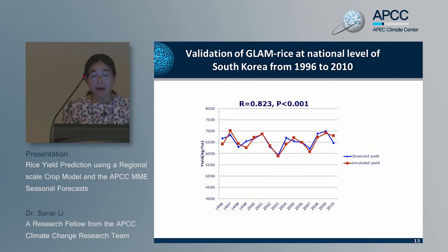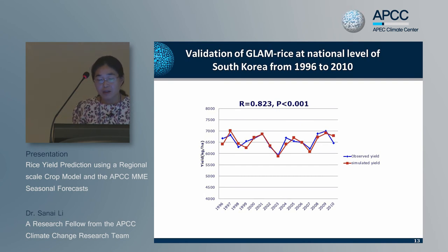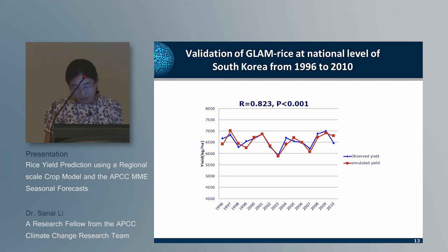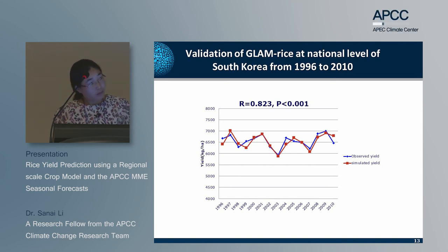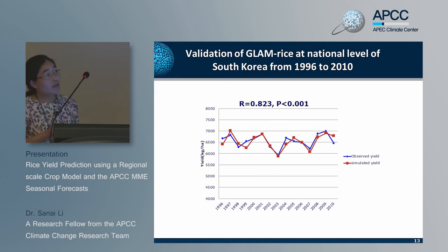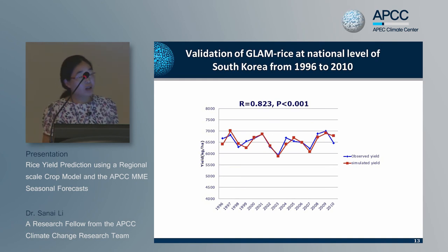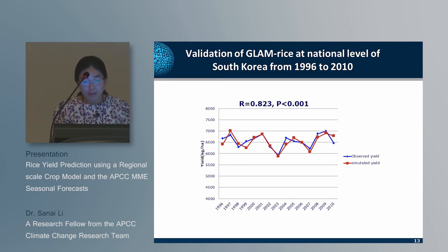Validation of GLAM at the national level of South Korea from 1996 to 2010 compares all observed yield with simulated yield, with the model driven with observed data. Generally, there is good agreement between observed and simulated yield for South Korea.